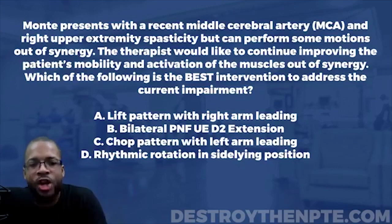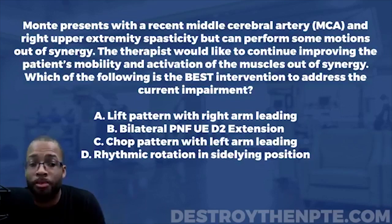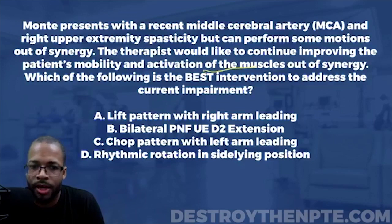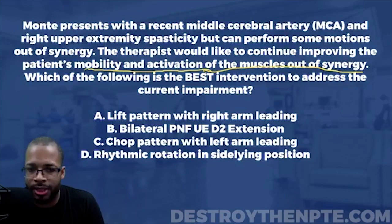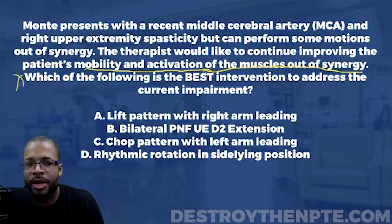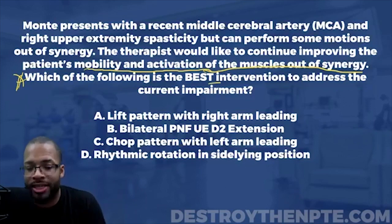Moving further down the question, the therapist would like to continue improving the patient's mobility and activation of muscles out of synergy. That's the goal — improving mobility and muscle activation out of synergy — still consistent with Brunnstrom stage four. The question asks for the best intervention to address the current impairment.